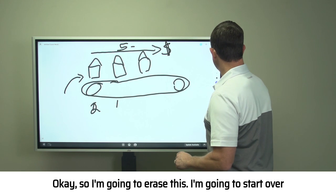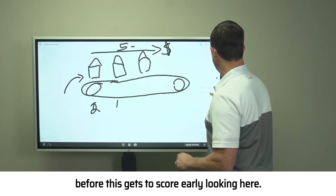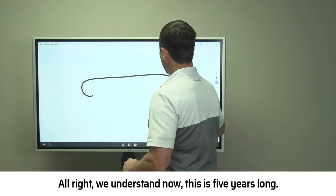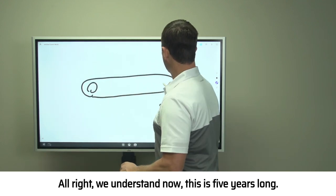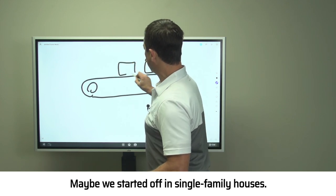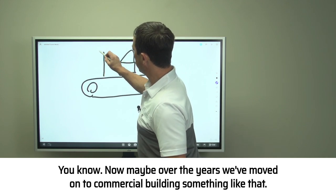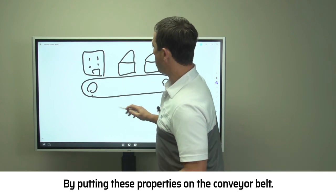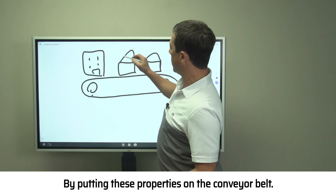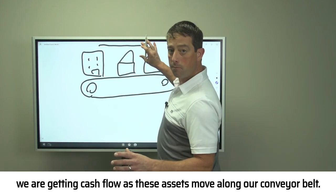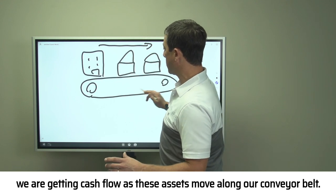I'm going to start over before this gets too squirrely looking. We've got our conveyor belt here again—five years long. We've put some assets on here. Maybe we started off in single-family houses. Now maybe over the years we've moved on to commercial buildings. By putting these properties on the conveyor belt, they're moving along.